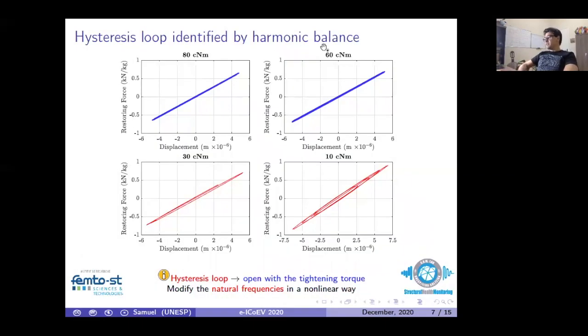The estimated hysteresis loop is identified here by harmonic balance using the vibration data measured in this beam. This can explain the spread in behavior. We can see that in the damaged condition, the bolted joint is well-tightened, and the restoring force is described only by stiffening effect, and this effect is dominant. However, when the torque loss is present, the restoring force presents a hysteretic effect with dissipation of energy, and the loop is open. In this condition, the natural frequency modifies in a nonlinear way.